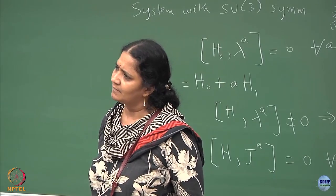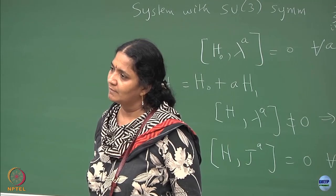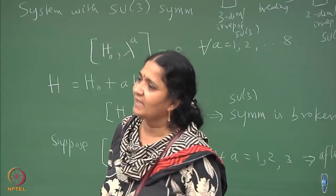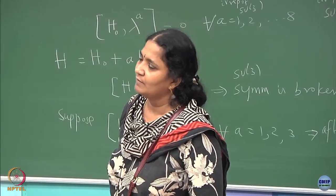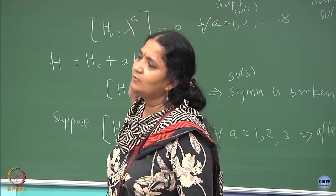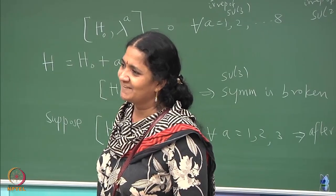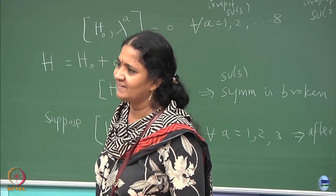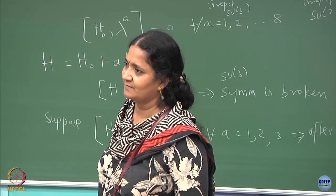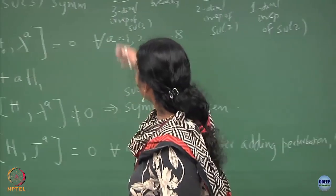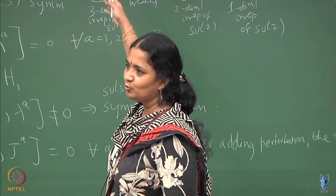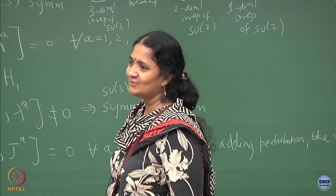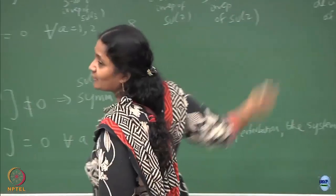In the discrete case you used a character table to find the breaking. Here for continuous groups I look at all possible dimensions for SU3 representations. When I break it up, if there are two possibilities for a given dimension it can appear twice, otherwise once. Now do it for the octet. The 8-dimensional adjoint representation — from the diagram you can see it should break into a triplet, then two doublets and a singlet: 3 plus 2 plus 2 plus 1. Check whether this argument confirms that.